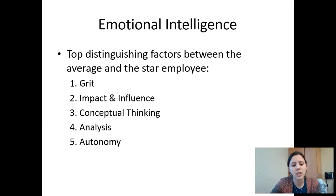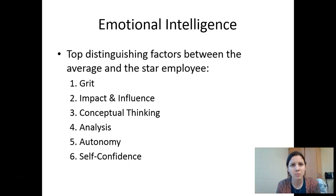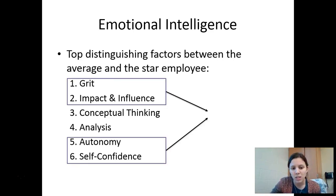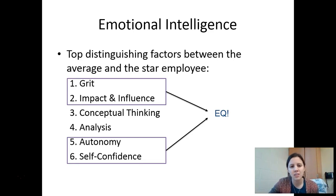The last one was self-confidence — do you have the ability to be confident in yourself to get things done? Do you trust yourself, or do you need someone constantly reassuring you? From this survey, Goleman noted that four out of the six top traits are all EQ. Conceptual thinking and analysis are definitely IQ-related and cognitively based, but traits one, two, five, and six — grit, influence, autonomy, and self-confidence — have nothing to do with cognitive ability. They're emotional intelligence.